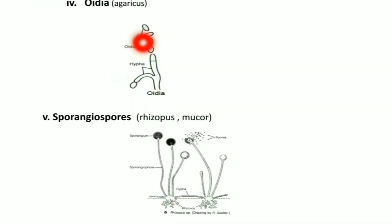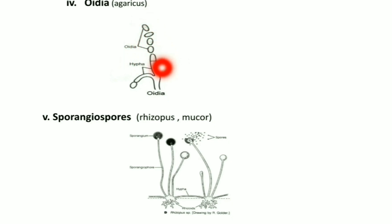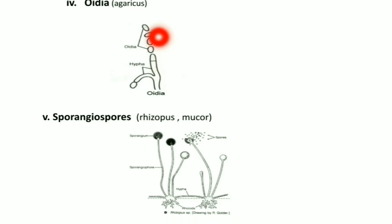Oidia: The hyphae have very thin membranes and break down into several small pieces. The hyphae break into numerous small thin-walled segments called Oidia. It is seen in Agaricus.